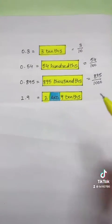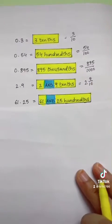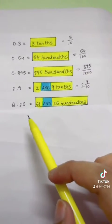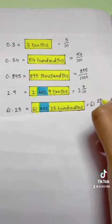Next we have 61.25, which is read as 61 and 25 hundredths. Remember, the 'and' represents the decimal that separates the fraction and the whole number, and it can be rewritten as 61 and 25 hundredths.